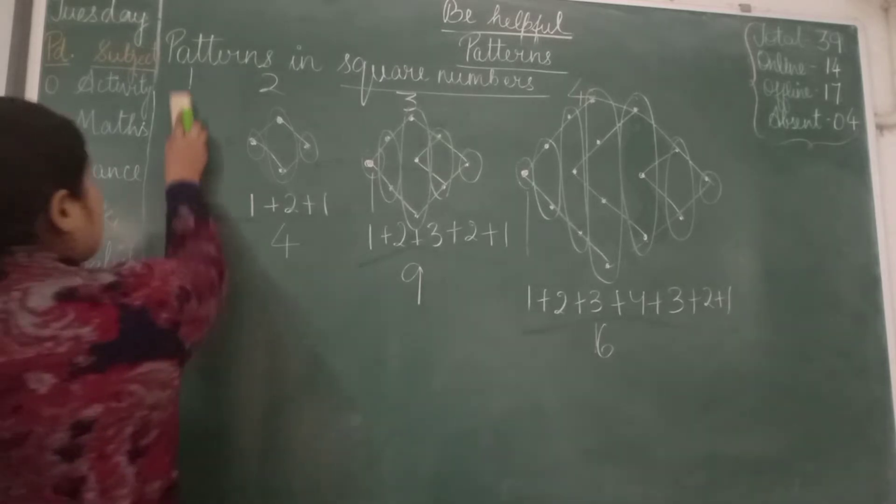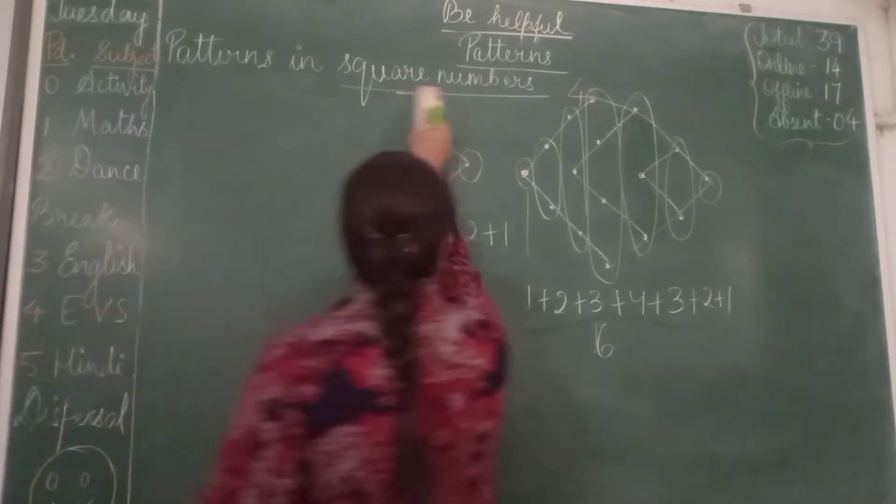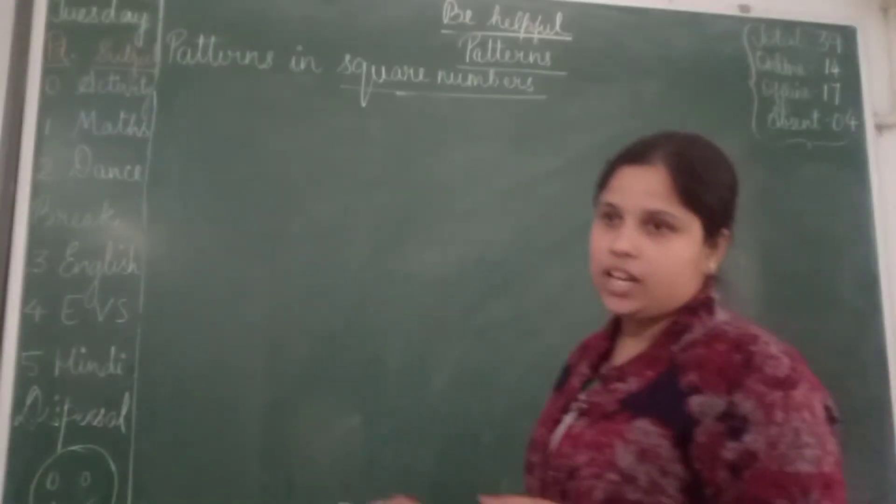Is it clear? Now we will be discussing some more properties of square numbers. Alright children, so here we have discussed one property.